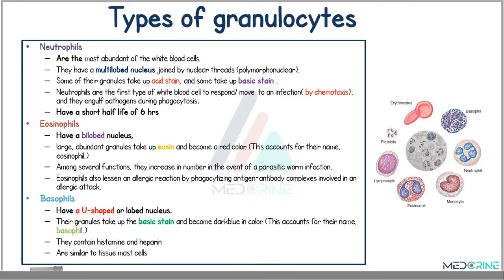Another type of granulocyte is the eosinophil. Eosinophils have a bilobed nucleus. Their large and abundant granules take up eosin and become red in color, which accounts for their name. Among their several functions, they increase in number in the event of a parasitic worm infection, and eosinophils also lessen an allergic reaction by phagocytosing antigen-antibody complexes involved in allergic or anaphylaxis attacks.